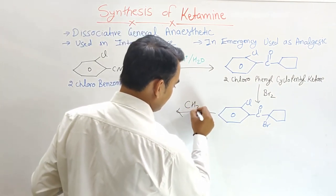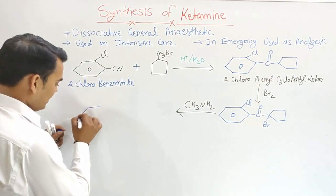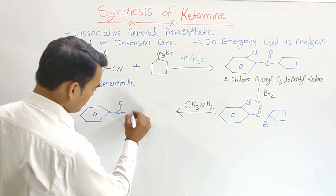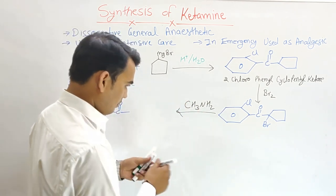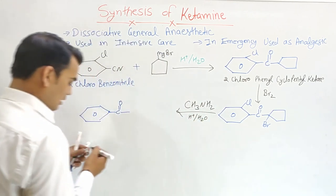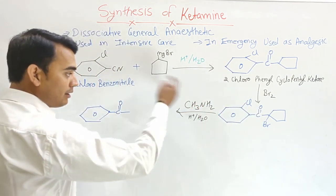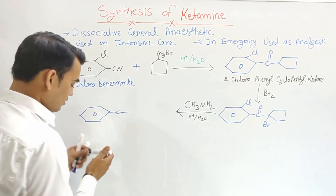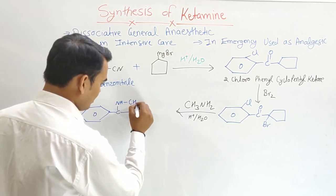This intermediate is then reacted with methylamine (CH3NH2) in the presence of hydrogen and water. What happens is the oxygen is removed and a methyl amino group is attached. The compound now has an NH and a CH3 group.